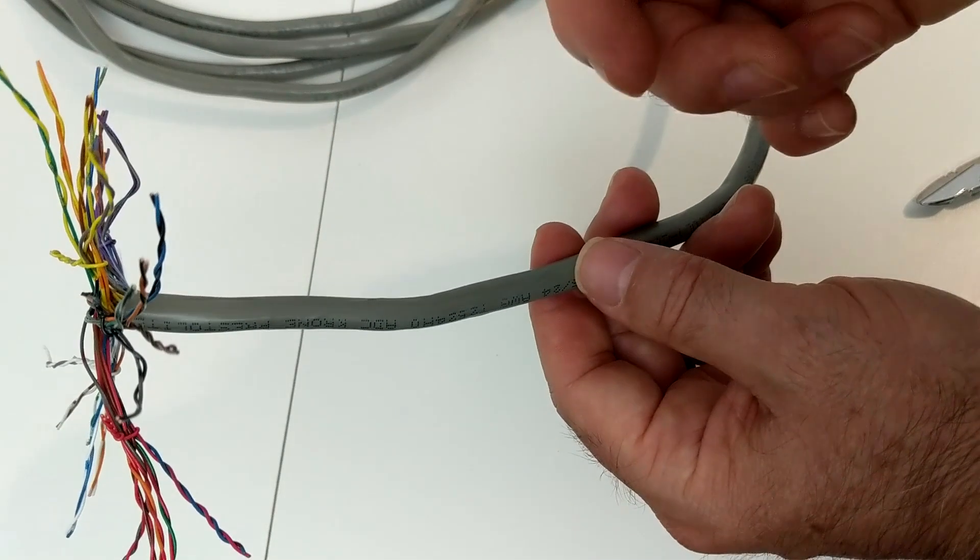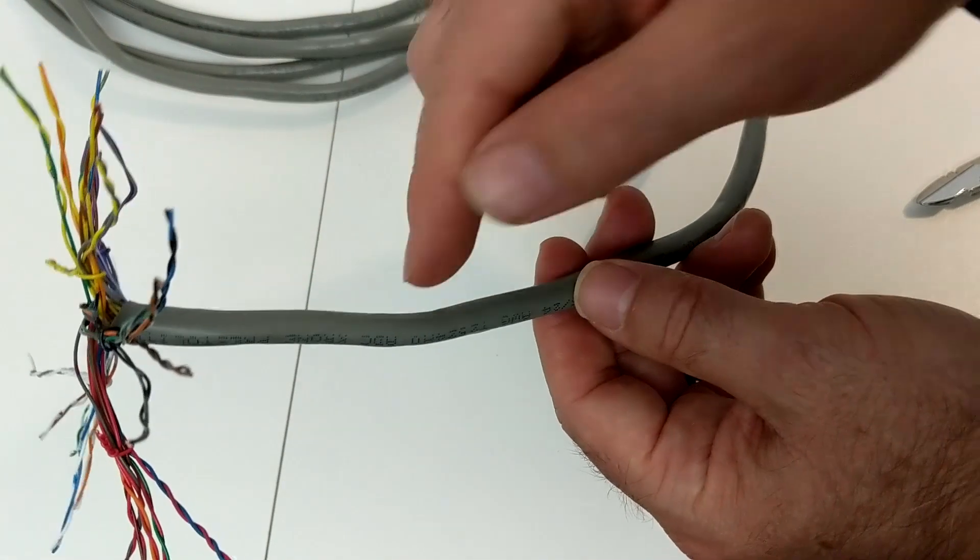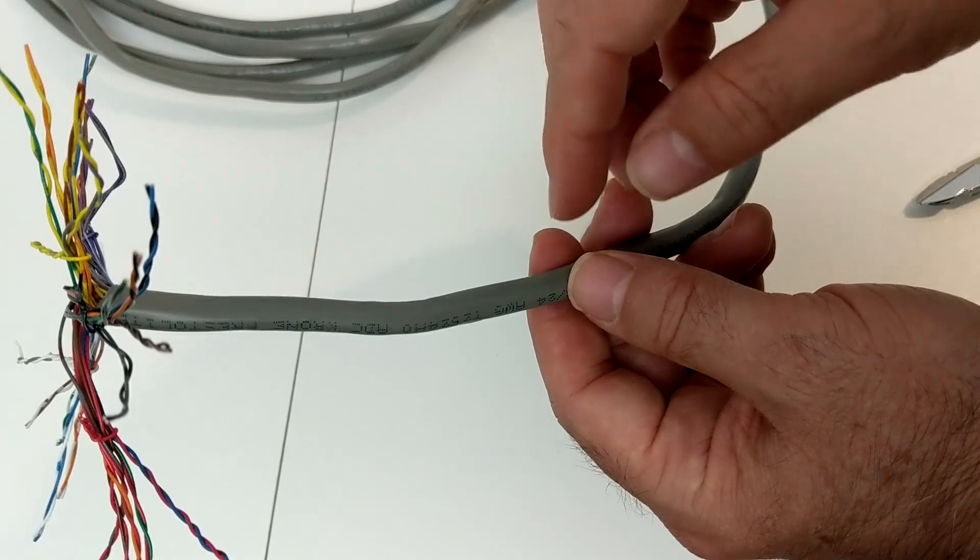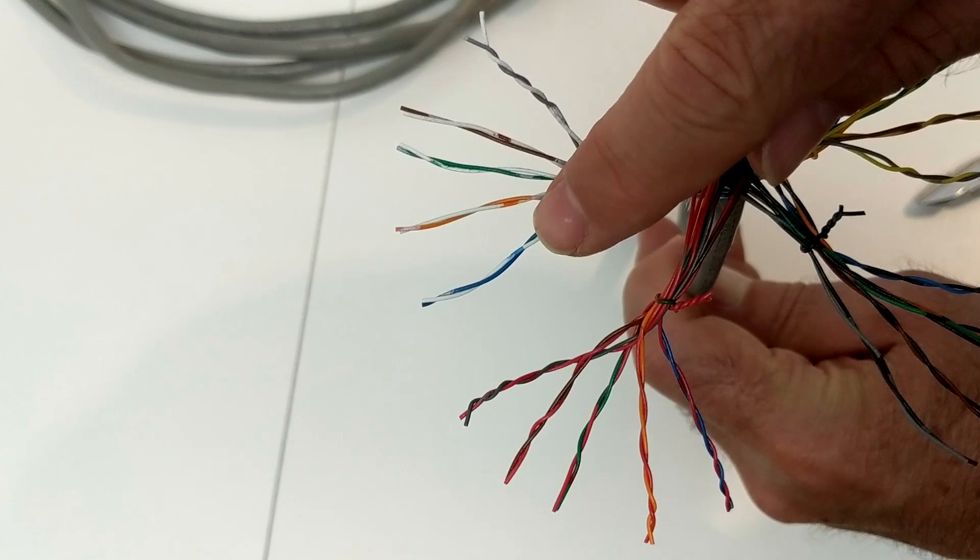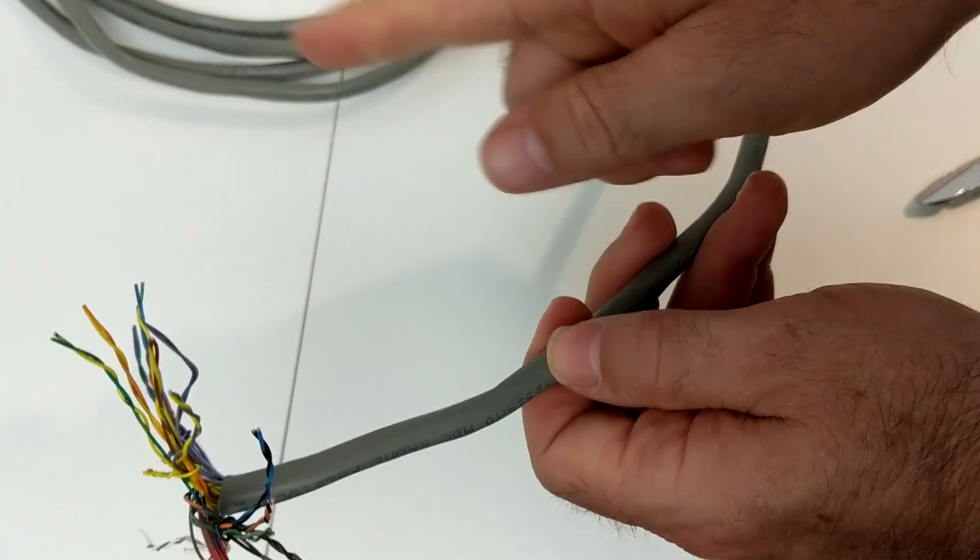It's a color ribbon and it's going to be in the same color pattern. So the first 25 pair would be wrapped in a blue white ribbon, and then the second 25 pair would be wrapped in an orange white ribbon, and so on and so on.